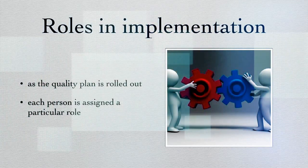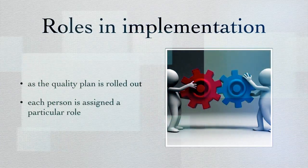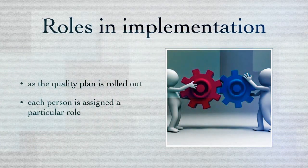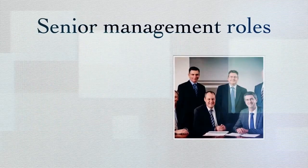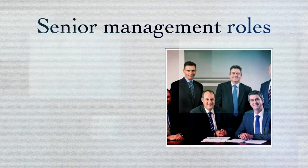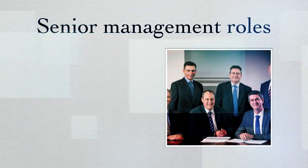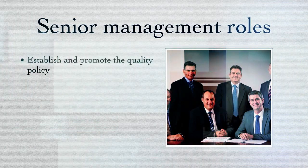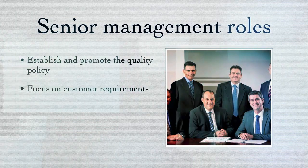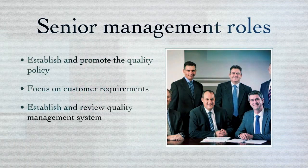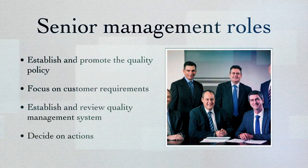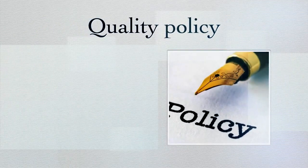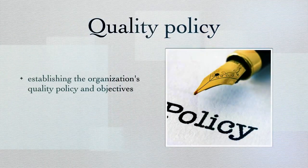In most organizations, upper management comprises executives and senior officers who are responsible for implementing the policies and directions that define the company. Upper management plays a key role in quality management deployment. They establish and promote the quality policy, they focus on customer requirements, they establish and review the quality management system, and they decide on actions. In quality plan deployment, upper management is responsible for establishing the organization's quality policy and objectives.